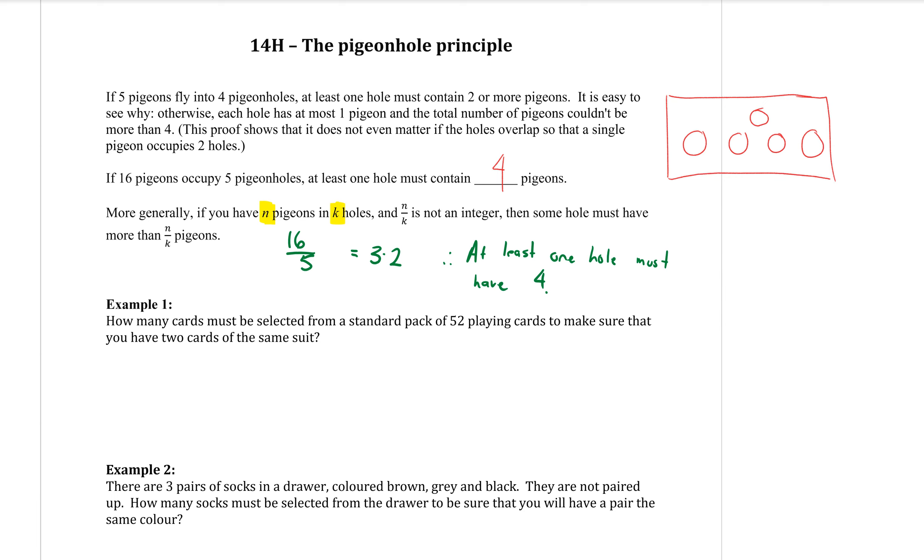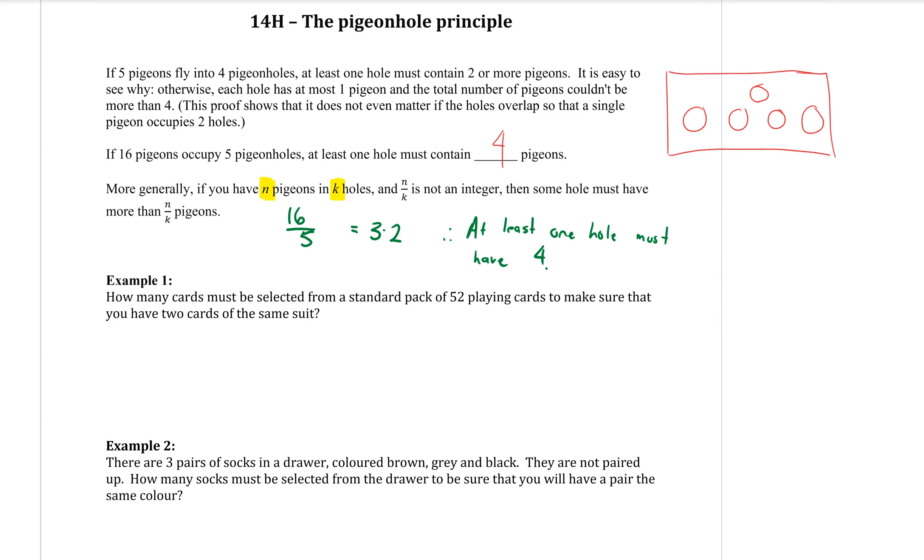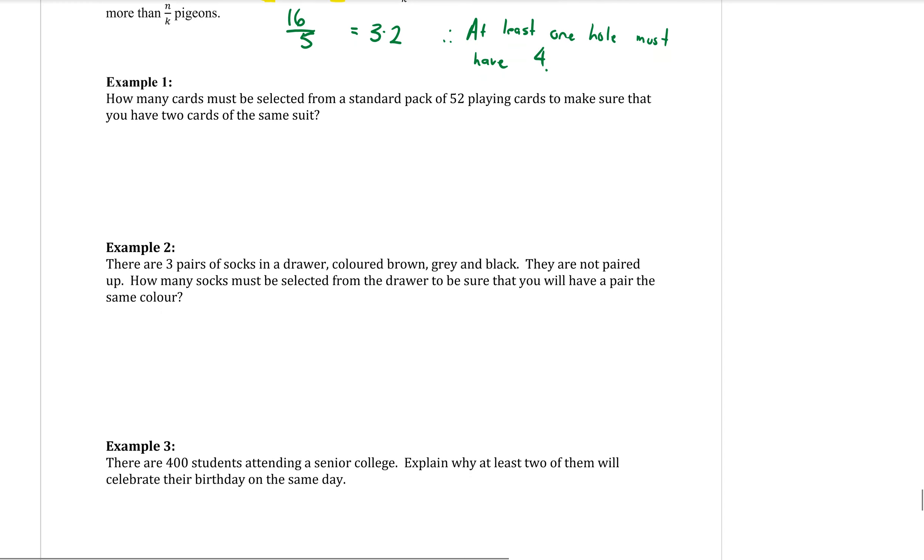So that's the only little formula that we're going to be working with. There's just a couple of examples here for us to look at. How many cards must be selected from a standard pack of 52 playing cards to make sure that you have two cards of the same suit? We can't use our little rule for this. We kind of have this backwards a little bit.